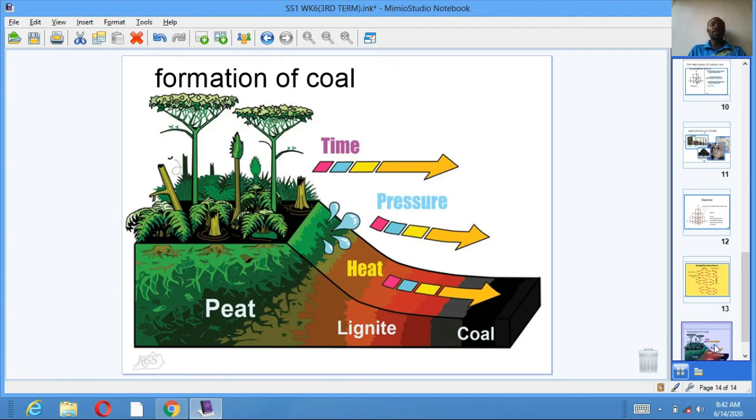Coal is used as fuel. Coal is used to manufacture graphite, coke, gas carbon, and coal gas. Coal can be used to manufacture synthetic petrol when it undergoes catalytic hydrogenation.